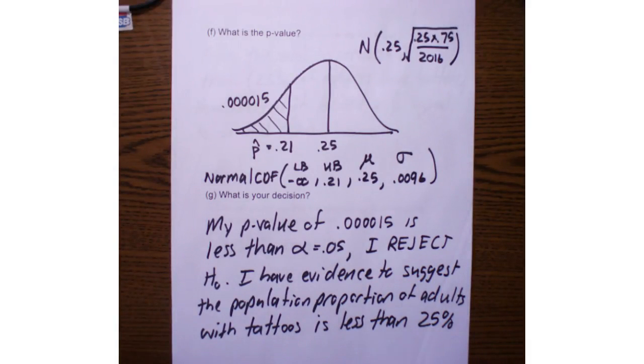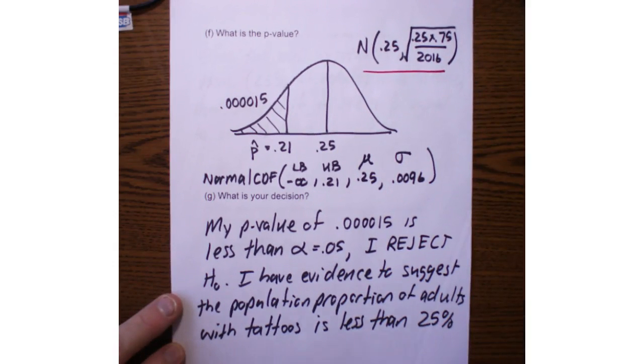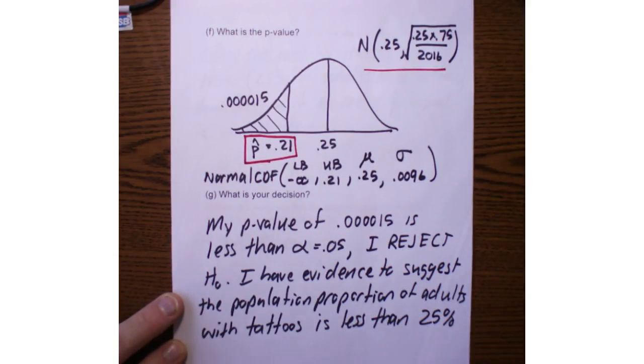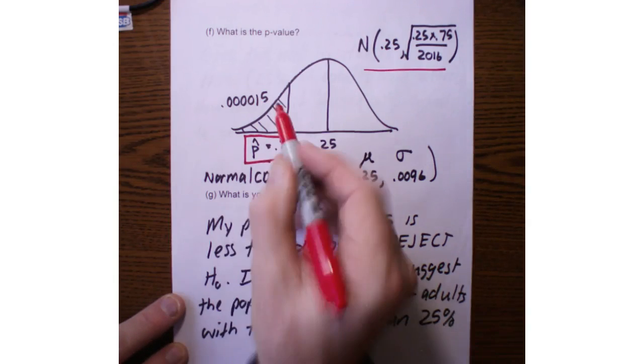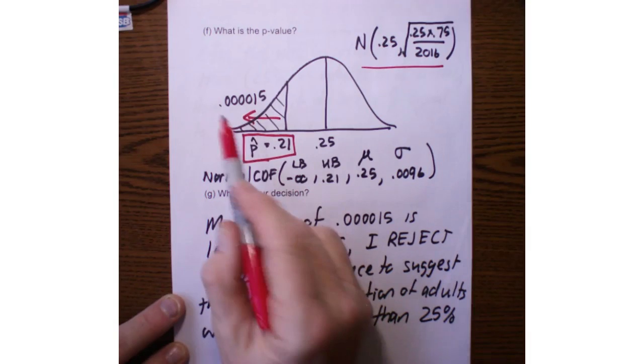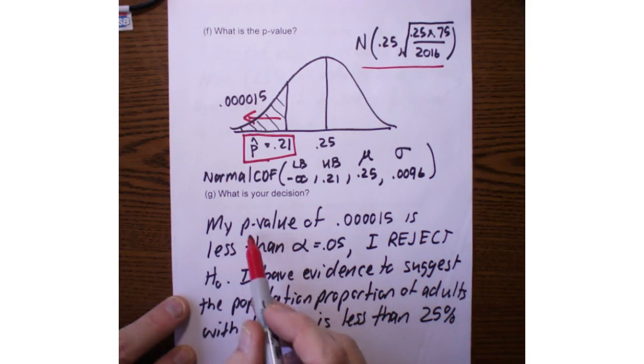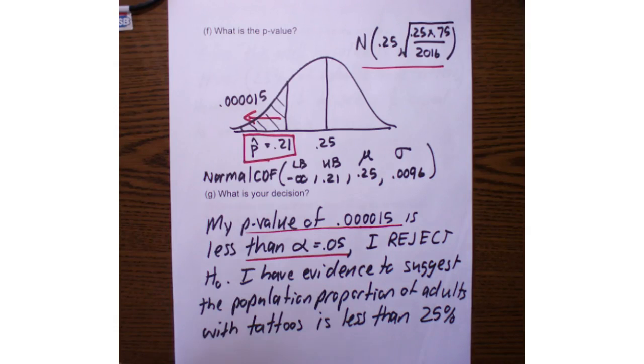So my P value, here's my model of my normal distribution. There's the model I'm using. Here's my sample proportion, P hat. So I want to know, how likely is it that my sample has a proportion of 0.21 or less? So I'm looking less than that. And using my normal CDF, that turns out to be 0.000015. So that is a very small P value. So my decision, since my P value of 0.000015 is less than my alpha level of 5%, I reject the null hypothesis.